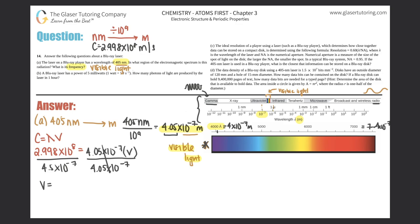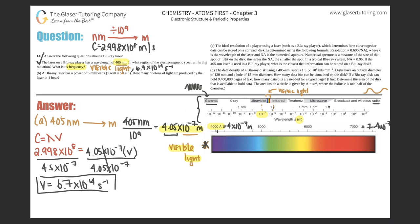Frequency equals 2.998 × 10⁸ divided by 4.05 × 10⁻⁷, which gives 6.7 × 10¹⁴ hertz — or per second, cycles per second, it's the same thing. So the frequency is 6.7 × 10¹⁴ s⁻¹. Part A is done.